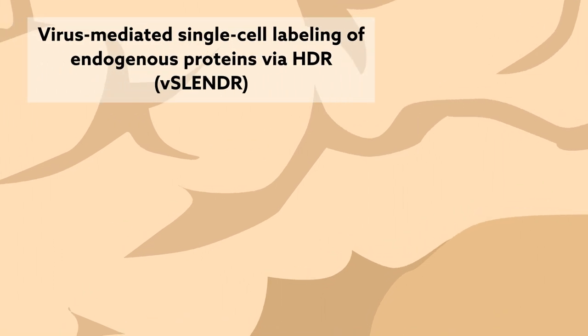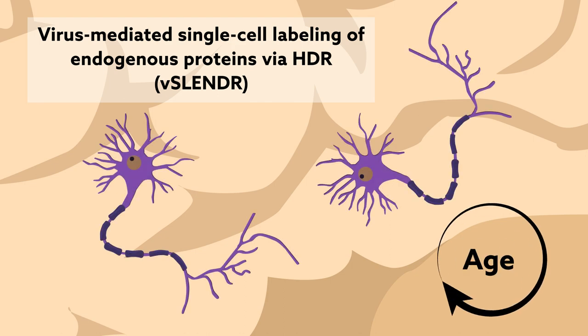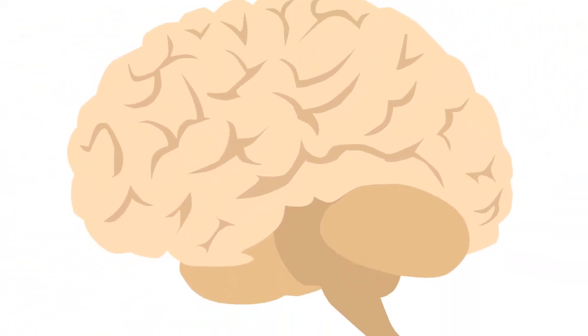The new method, which the team calls V-Slender, is capable of working in virtually any brain area, cell type, and age, regardless of whether cell division is still happening, greatly expanding the types of experiments neuroscientists can do to probe the function of the brain.